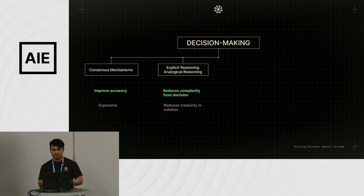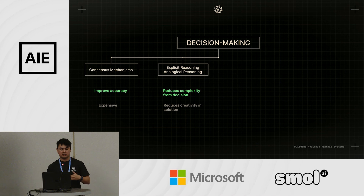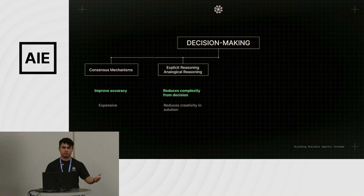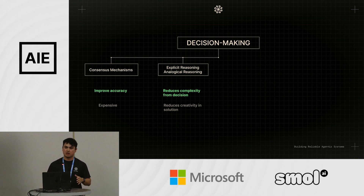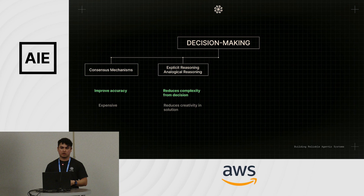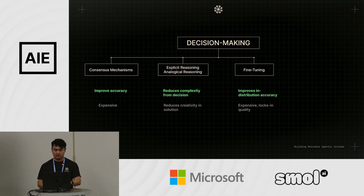Explicit and analogical reasoning — also known as chain of thought, checklists, chain of density, or analogical prompting. You want the system to explicitly outline its reasoning or decision-making criteria to reduce complexity. For example, if you create a checklist of what constitutes a reasonable left vs. right decision, your system will do better at choosing. For very broad domains or huge action spaces, techniques like chain of thought or chain of density are super worth exploring for improving performance.